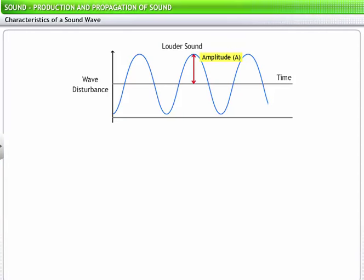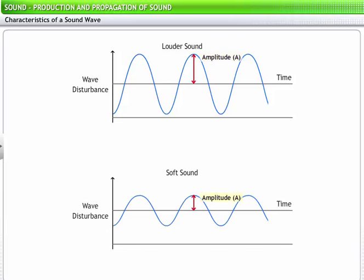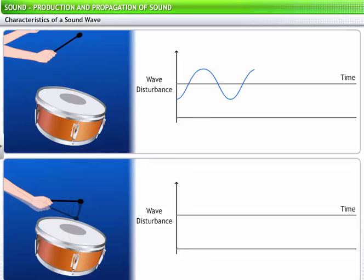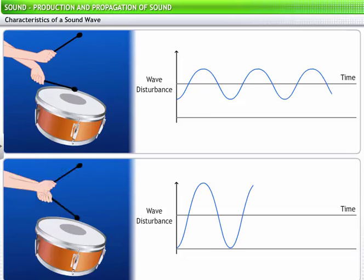Greater the amplitude, louder the sound heard, and lesser the amplitude, the lower the audibility of the sound. Listen to these two sounds produced by the same drum. The second sound was louder than the first. This is because the amplitude of the sound produced the second time was higher. A loud sound can travel across a larger distance because it is associated with high energy.